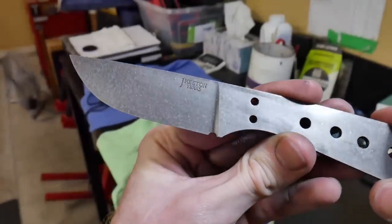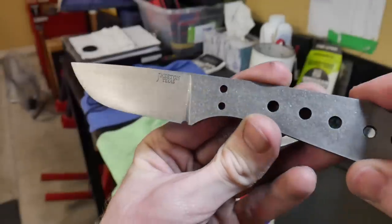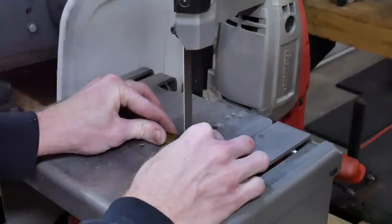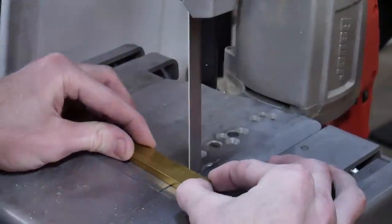Spray this guy down and this is the finish that we were able to achieve. You can see some of those specks towards the plunge line there, so I'm still trying to figure out what those are, but we're going to move on to the bolsters here.